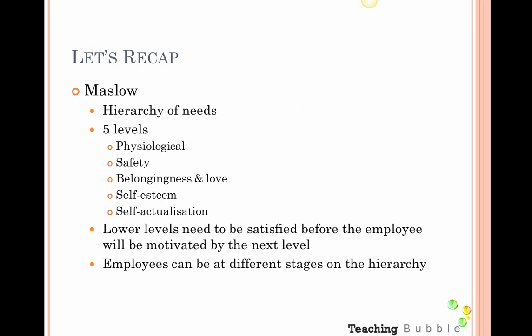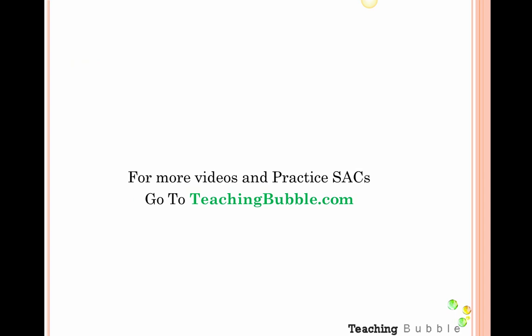To recap: Maslow's Hierarchy of Needs is a hierarchy of five levels. At the bottom is physiological, then safety, then belongingness and love, then self-esteem, and finally self-actualization. Lower levels need to be satisfied before an employee will be motivated by the next level, and it's important to note that employees can be at different stages, so a variety of strategies need to be implemented. For more videos and practice SACs, go to teachingbubble.com.